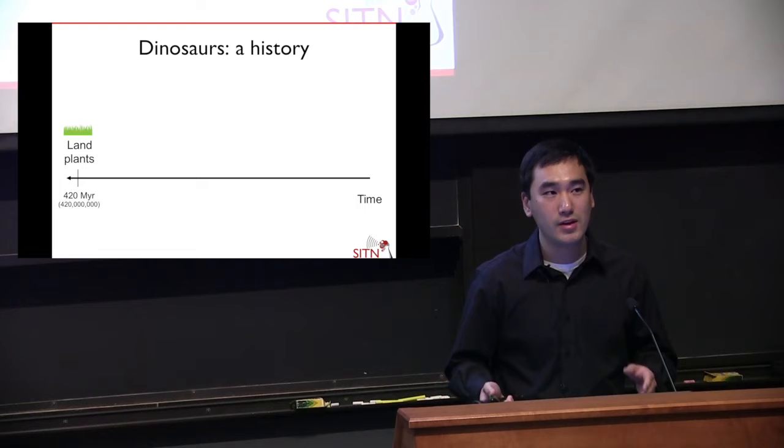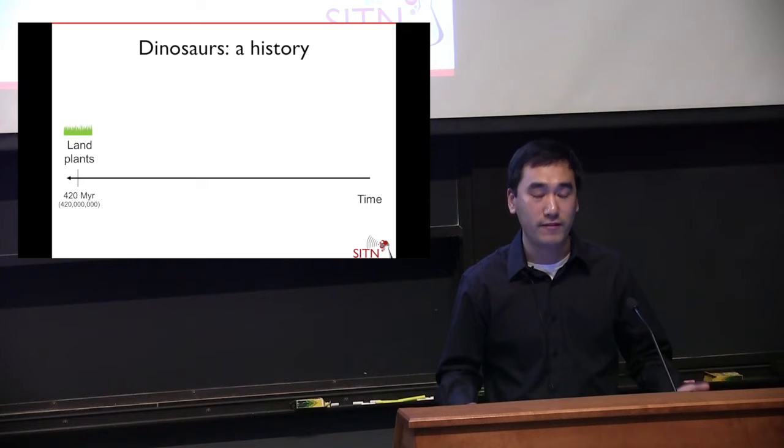Picture this scenario: we have a primordial Earth. So far there's nothing on the land, but there are fish in the sea — we've developed fish at this point. At some point around 420 million years ago, we get the first plants that appear on land. These are the first multicellular organisms that start to appear outside of the oceans and colonize the real face of the Earth as we know it.